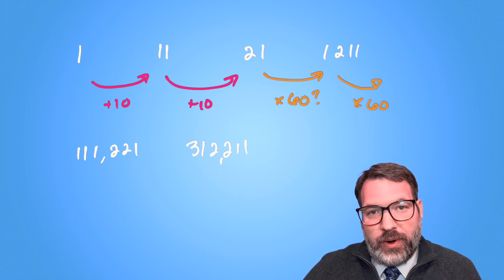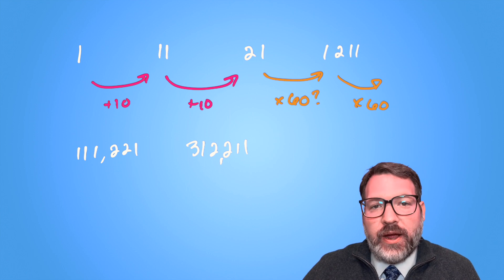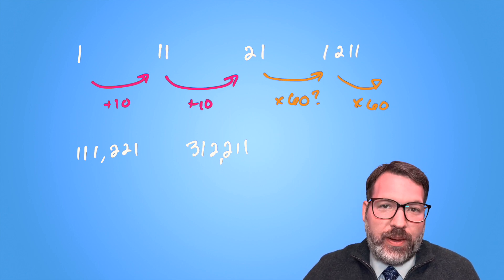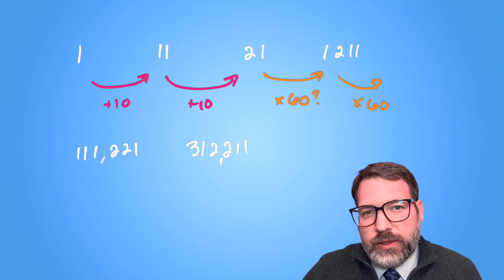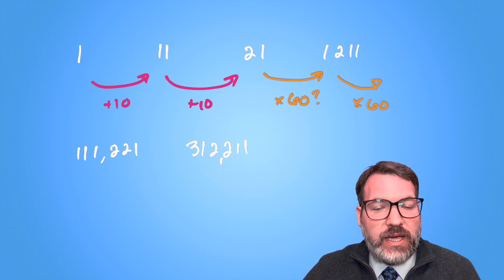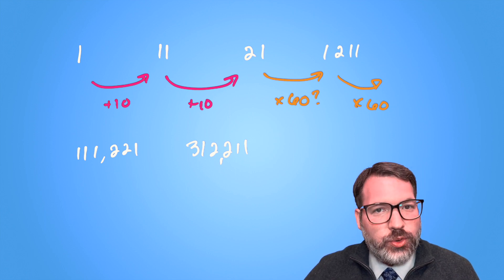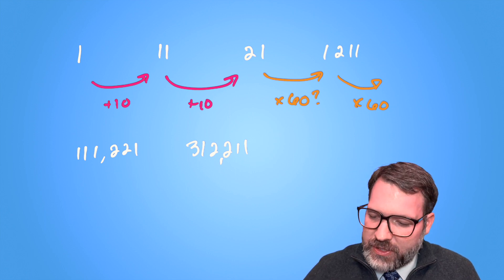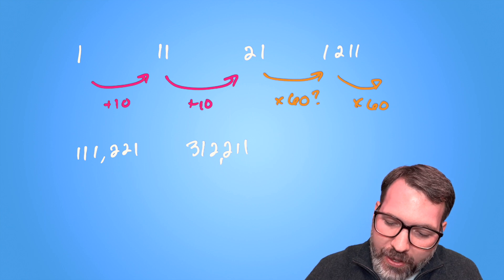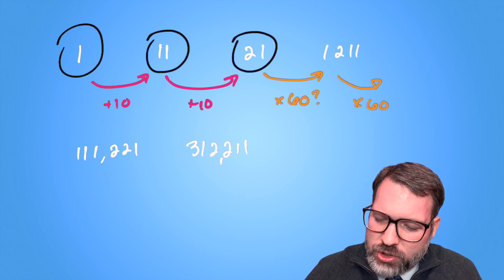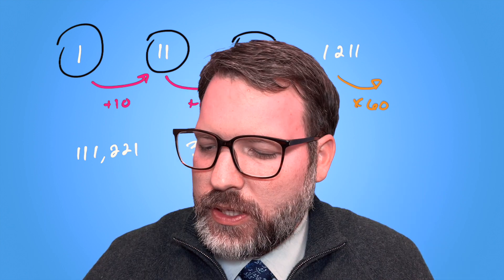Instead of thinking about this operationally, trying to think of it as an arithmetic sequence or a geometric sequence, trying to add or multiply by something over and over again, look at the numbers themselves and say those numbers. But don't say them the way we might normally say them, 1, 11, 21. Say them in terms of their digits. We start at 1, and then we have 1, 1, and then we have 2, 1. Do you see it yet?